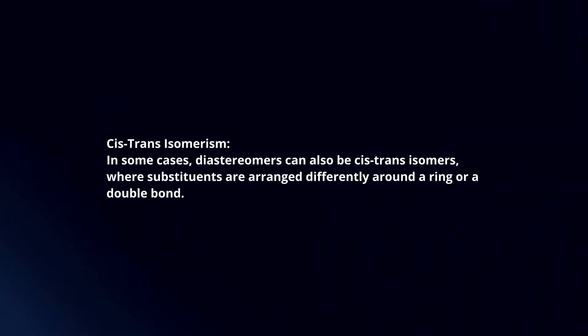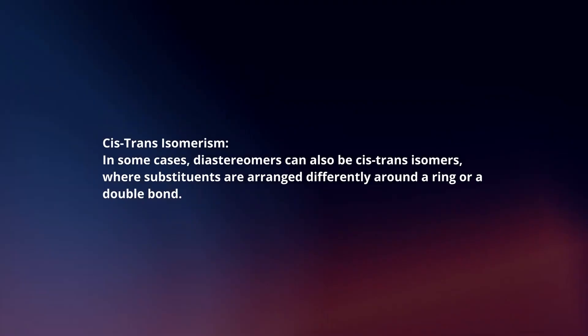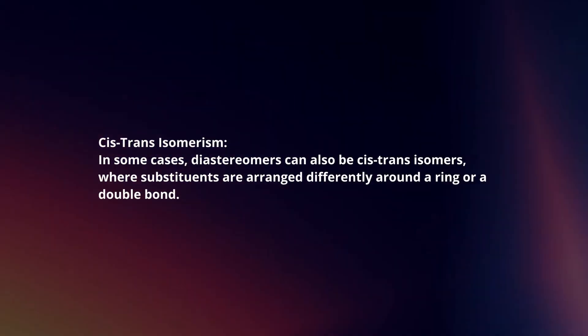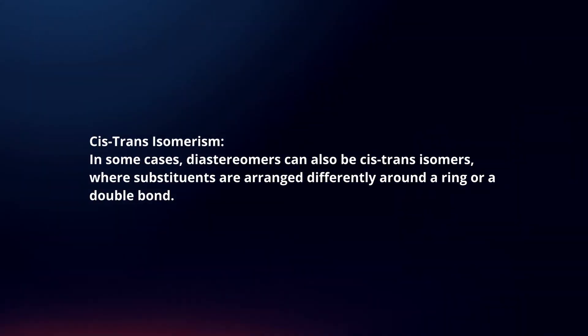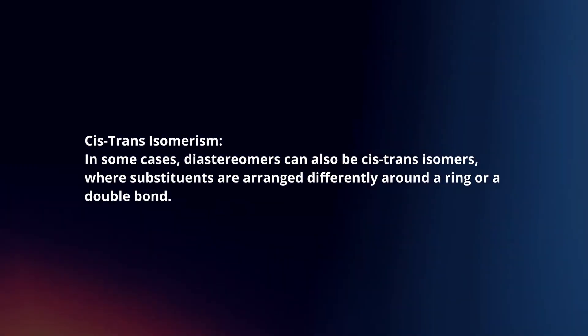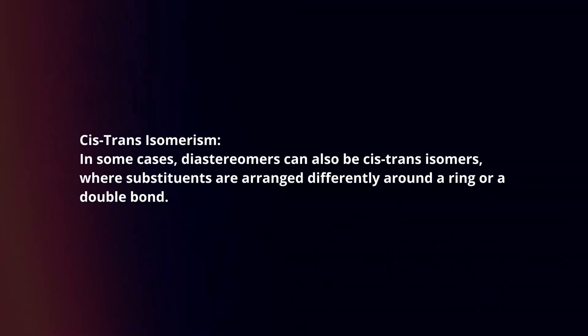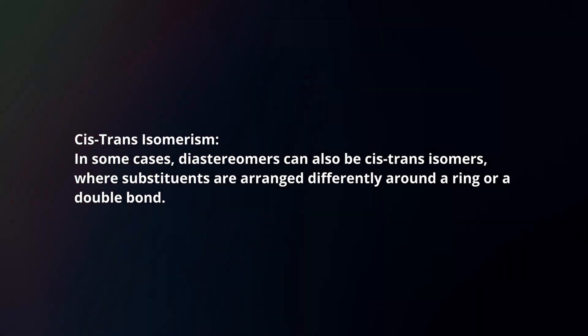Cis-trans isomerism. In some cases, diastereomers can also be cis-trans isomers, where substituents are arranged differently around a ring or a double bond.